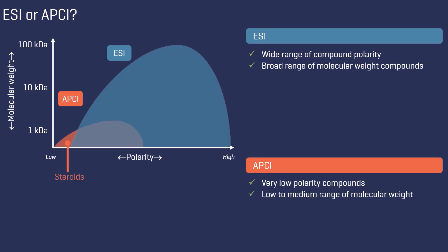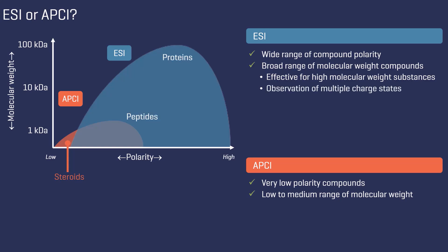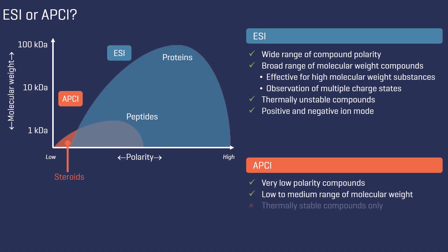ESI provides compound analysis across a broad range of molecular weights. It is notably effective for high-molecular weight substances, such as proteins and peptides, where multiple charged states can be detected. Unlike APCI, ESI is suitable for thermally unstable compounds and can be operated in both positive and negative ion modes, whereas APCI is limited to thermally stable molecules and tends to be restricted to positive ion mode.